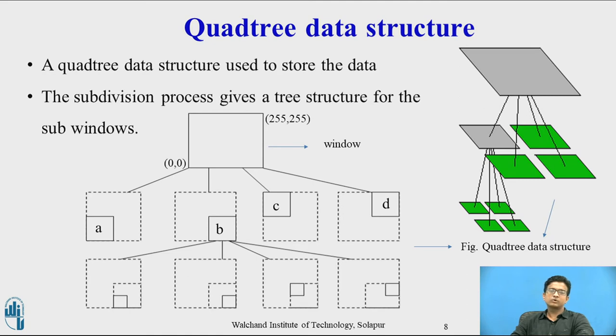This diagram shows the quadtree data structure which is used to store the data. The subdivision process gives a tree structure for sub-windows. It also yields a tree structure for sub-windows as shown in the figure. In this figure you can see the root of the tree is the display window. Each node represented by a box contains the coordinates of the lower left-hand corner and the length of the side of the sub-window. Assuming that subdivided windows are processed in the order ABCD, that is from left to right at a particular subdivision level in the tree.